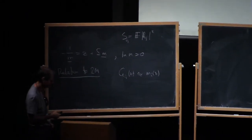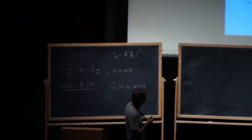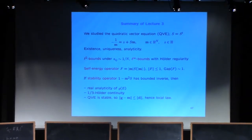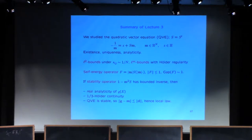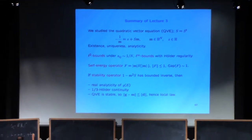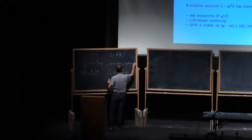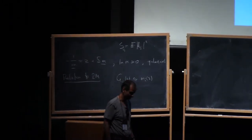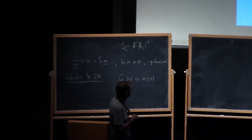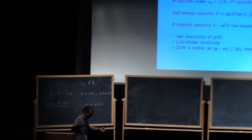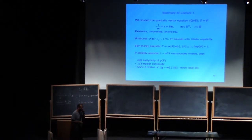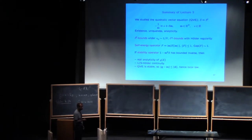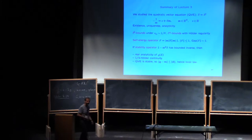That is the reason why we studied that equation. Last time I showed you that this equation has a unique solution, the solution is analytic in the parameter Z, and there were various bounds. We wanted to bound this solution, especially in the regime where eta goes to zero — eta being the imaginary part of Z. All the bounds become really meaningful when eta is very small, that's the critical regime. We found L² bounds on the solution in both the L² norm and the L∞ norm under certain conditions on S.